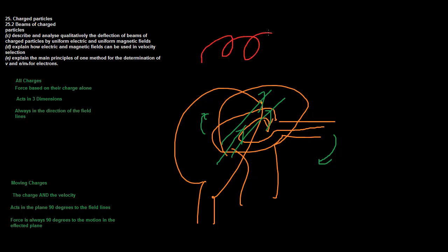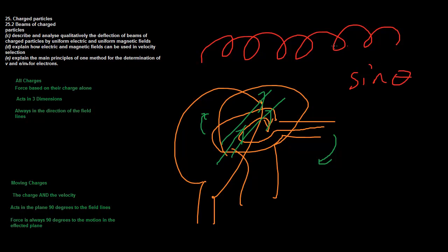The electrons still have circular motion, but the velocity component along the field lines is unaffected by the magnetic field. This produces a helical spiral motion. Through the application of a magnetic field causing circular motion, while leaving a component of velocity unaffected - resolved via sin theta - this helical motion is actually the principle behind how electron microscopes work.